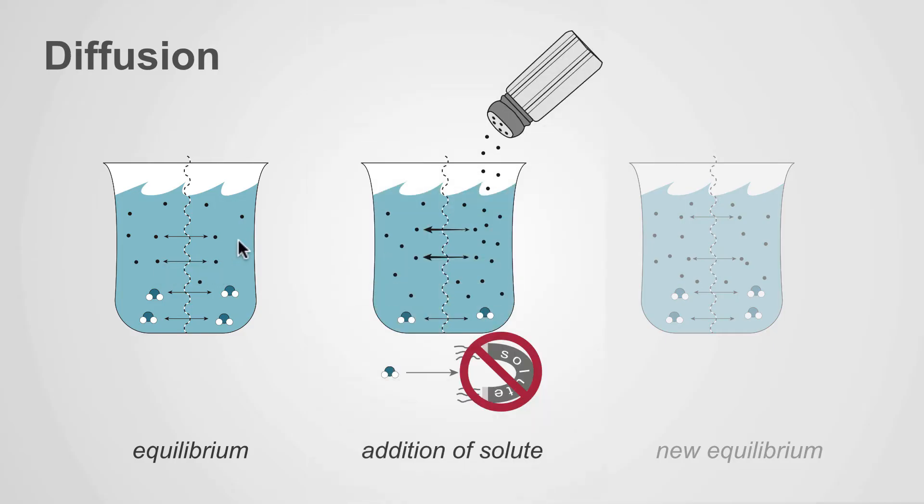So now, when you add solute to one side of the membrane, rather than the solute drawing water across, the solute diffuses across the membrane.